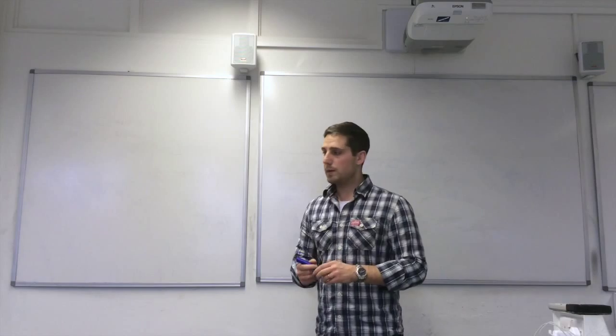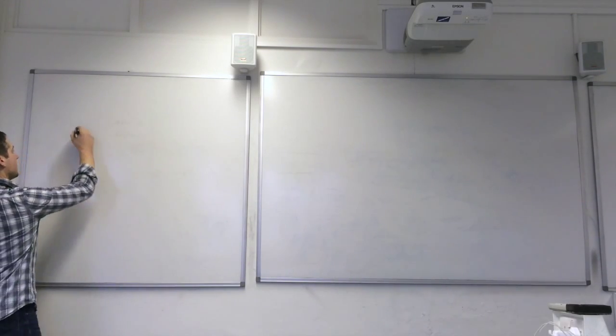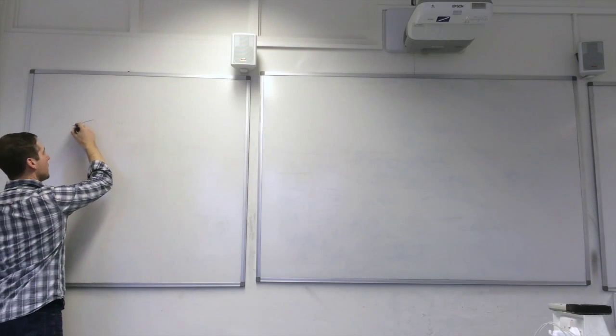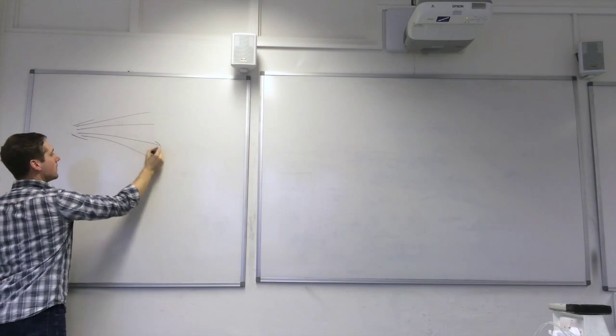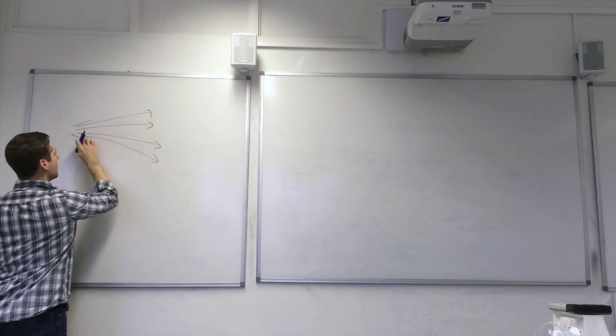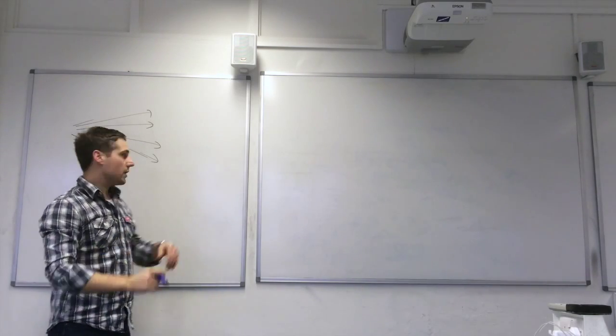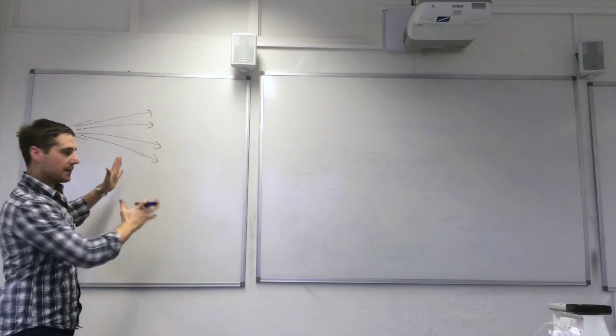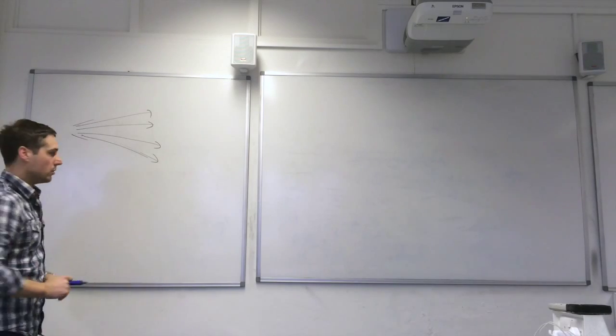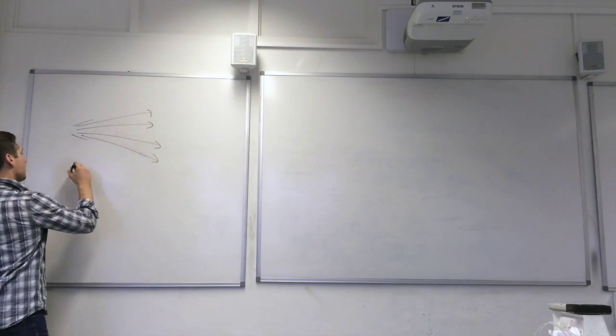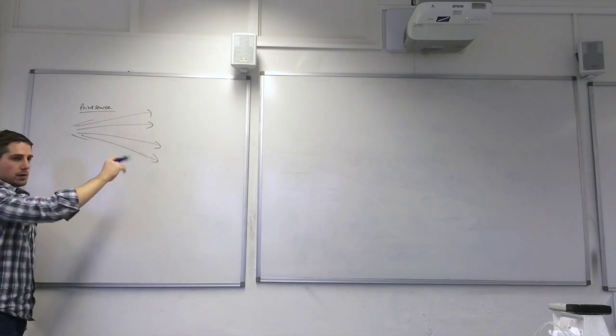The first thing we need to appreciate is what a collimated beam is. If you have a point source of X-rays, the rays are all diverging, spreading out, and for that reason the intensity is falling off with distance according to that inverse square law. That's an ordinary point source.